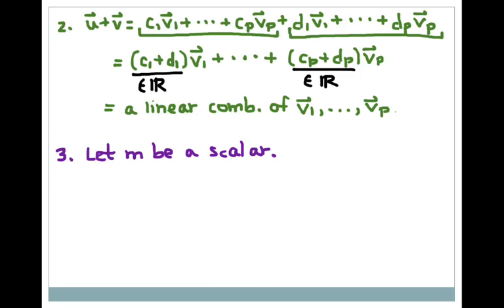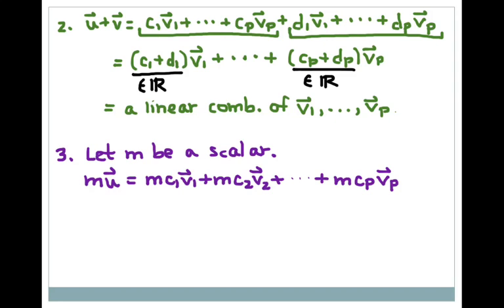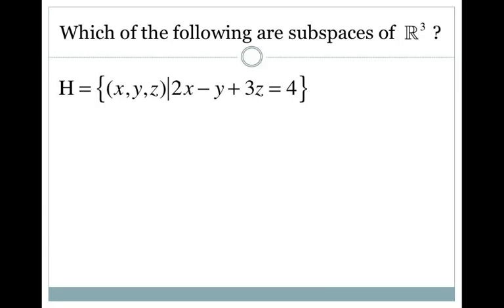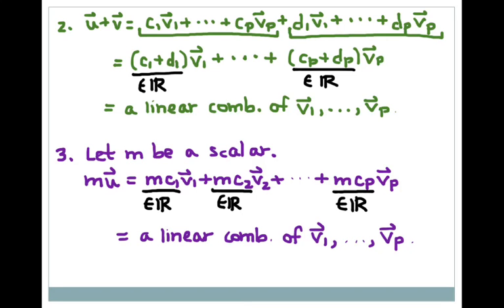For the third criteria, let m be our scalar — a real number — and multiply u by m to get mu. Each component gets multiplied by m; I distribute the m. Notice that m times c1, m times c2, m times cp are each real numbers, so I just get a different linear combination of v1 through vp. So mu is in the span as well. We've shown that all three criteria of a subspace are met for any span, so any span is a subspace of Rn if the vectors are in Rn.